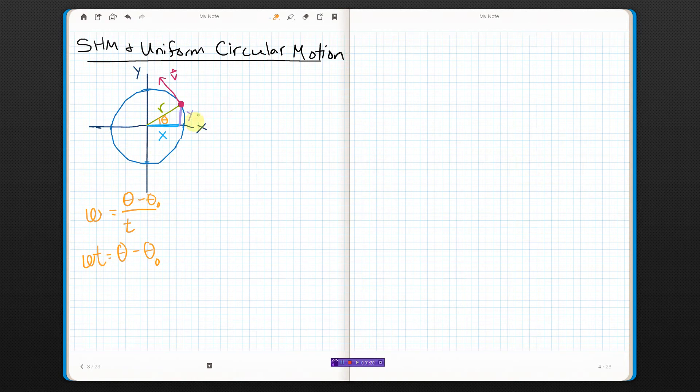So this is its angular position, but what about its linear position, its coordinates? Well, right now, in this picture, its coordinates are X and Y.